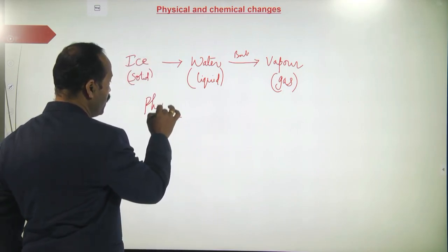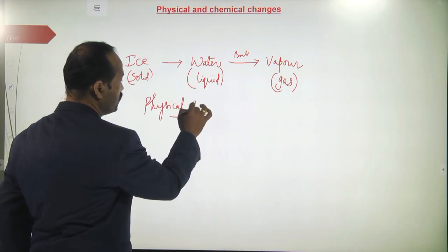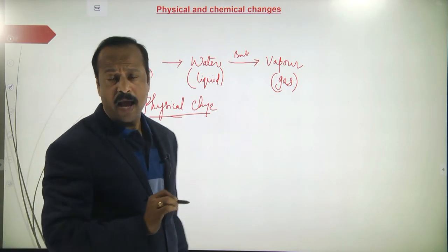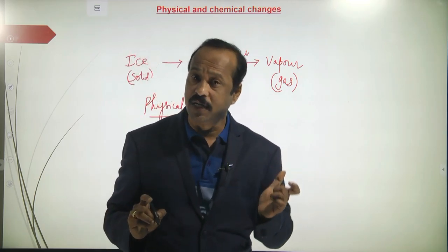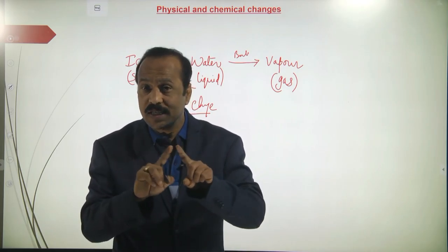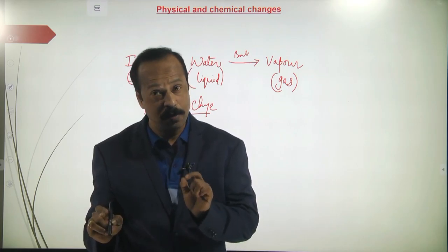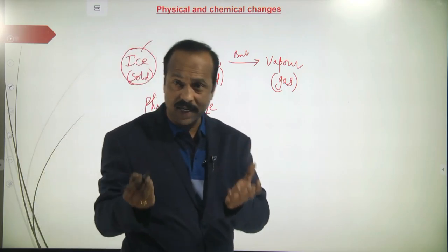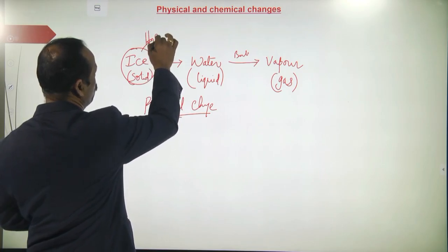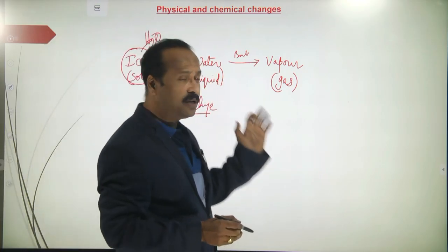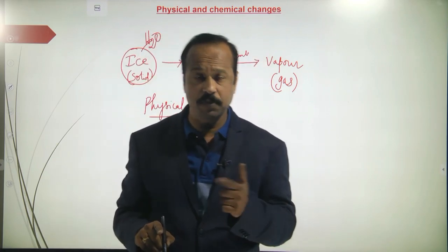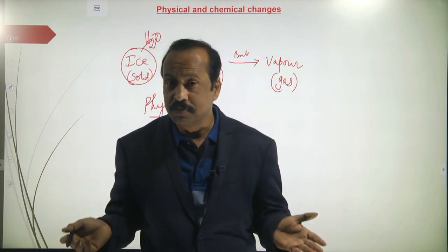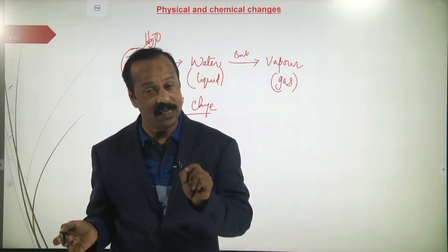Remember, very important: in a physical change, there is only a change in physical properties. And a very important thing is that when any substance undergoes a physical change, there is no change in its composition. For example, ice has the formula H2O; water also has the formula H2O; and water vapour also has the formula H2O. So there is no change in composition, meaning no new substance is formed.